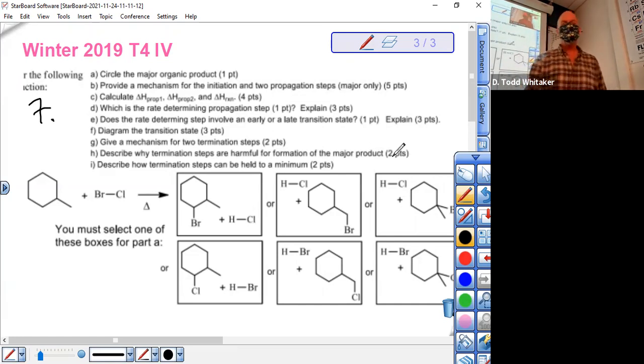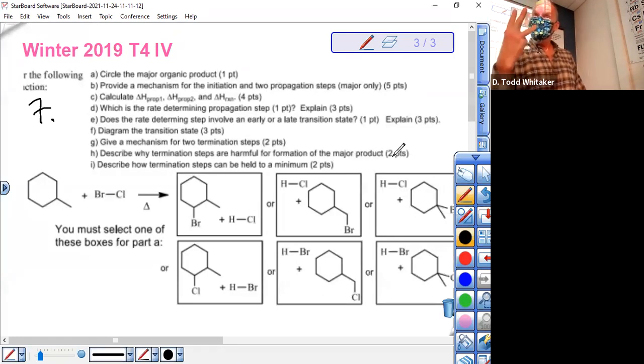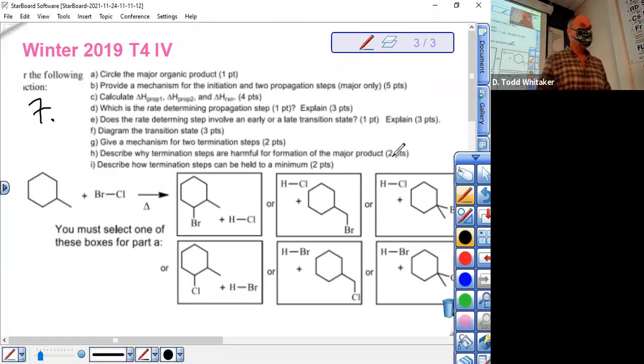Now, if you look at previous videos, I'm going to assume you've watched them. To get the major product involved three questions being answered. Question 1. Formation of which HX is fastest? Is it HCl or HBr?